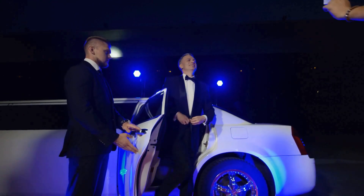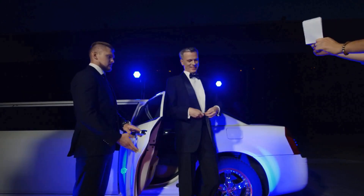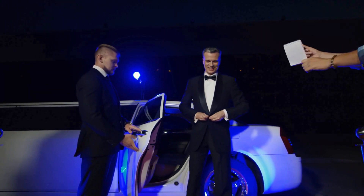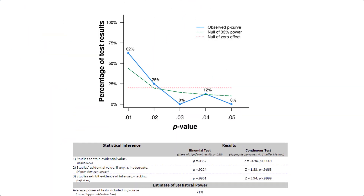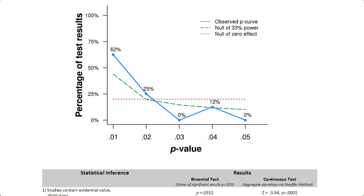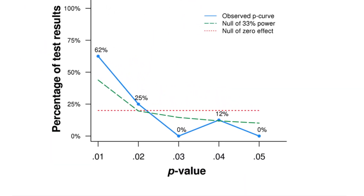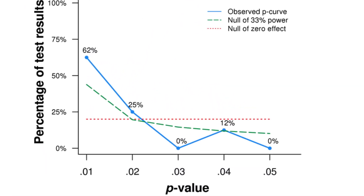So, you've just p-hacked your way to fame and you're feeling on top of the world. But wait, what's that? It's a p-curve that can detect all the shady research practices you engaged in, oh no!